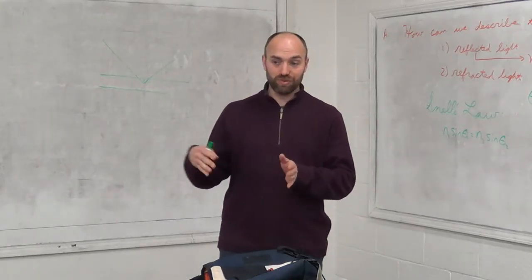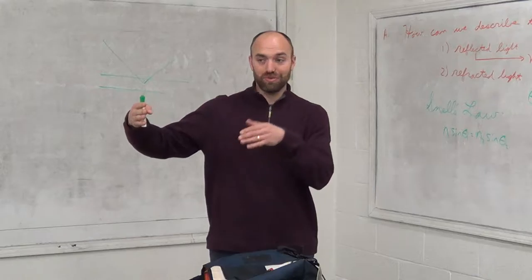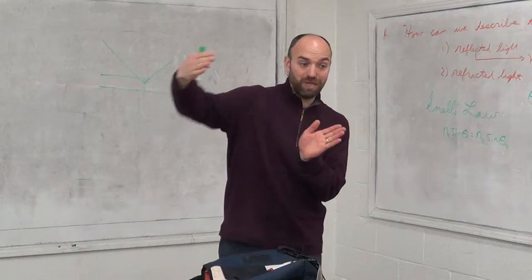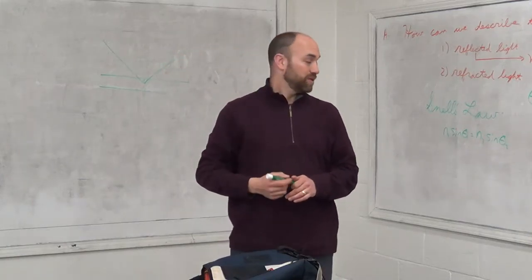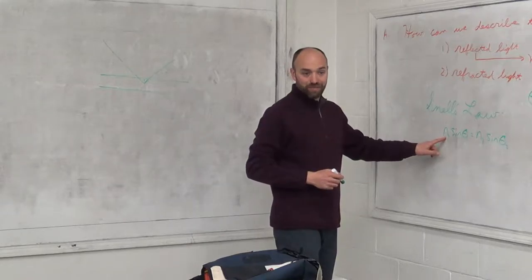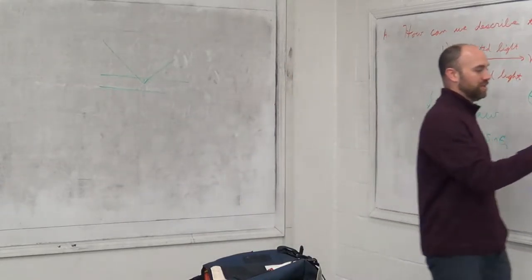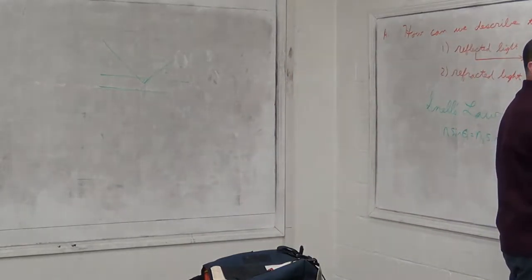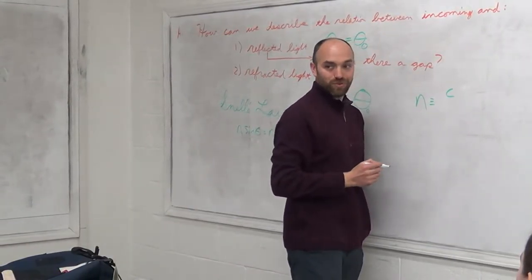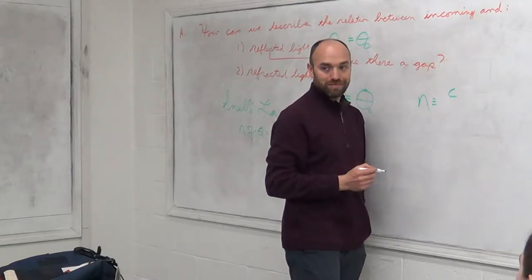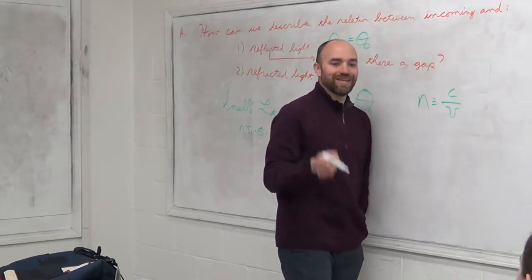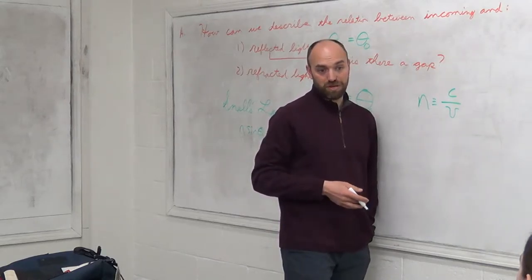Remember what we talked about last week — the tuba player and the flute player, one enters the mud bog first and slows down while the other keeps going at the same speed. That's what's going on here, and this N describes that speed. N is defined as the speed of light — which is 3 times 10 to the 8 — divided by the speed of light in that medium, whatever that medium may be.